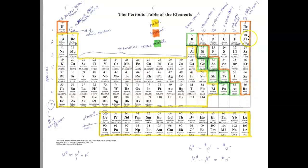Generally, all of the non-metals over here are gases. The only two liquids on your periodic table are mercury and bromine, but you don't really need to know that.